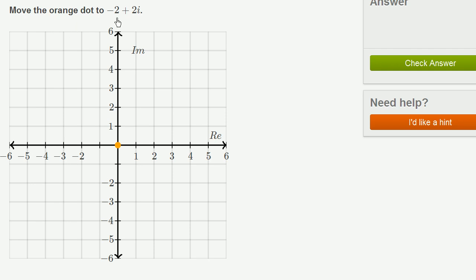Move the orange dot to negative 2 plus 2i. So we have a complex number here. It has a real part, negative 2.